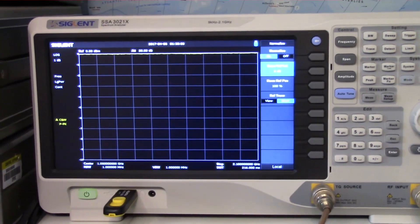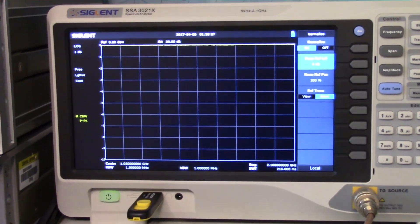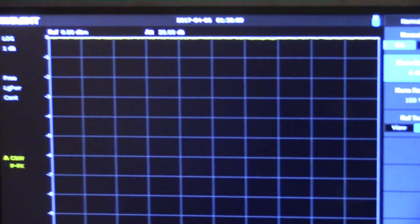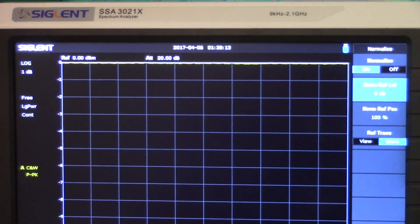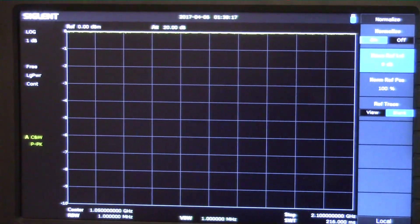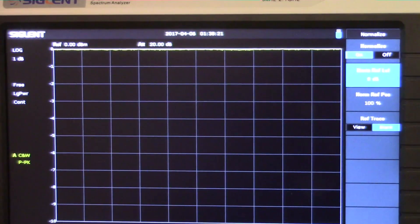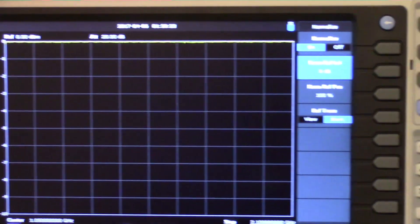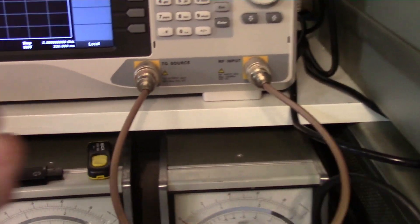I've set up the spec, got the tracking generator on, normalized the trace, and you can see the top trace is our reference 0 dBm signal. Each graticule represents 1 dB of insertion loss, that way it's a little bit easier to see what is going on.